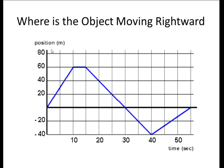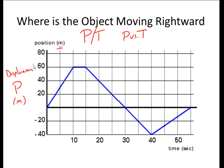On our PT graph, which is a position versus time graph, position is another way for us to say displacement, and it's measured in meters on the y-axis. On the x-axis, which is expressed at the bottom of the page, is time, measured in seconds. So when I say position versus time, my y-axis is position or displacement, and my x-axis is time.